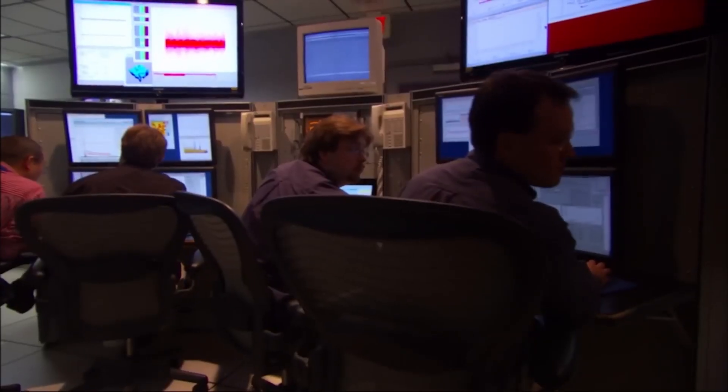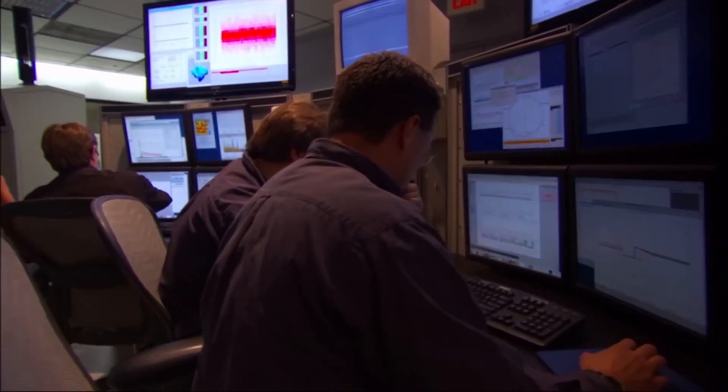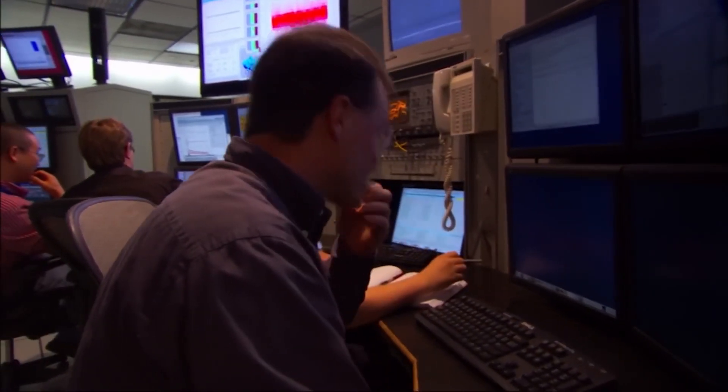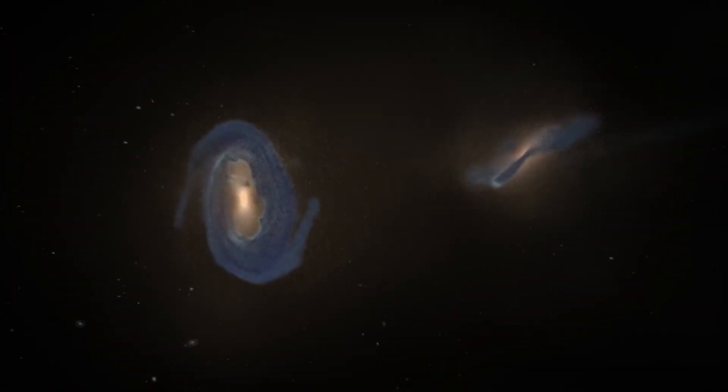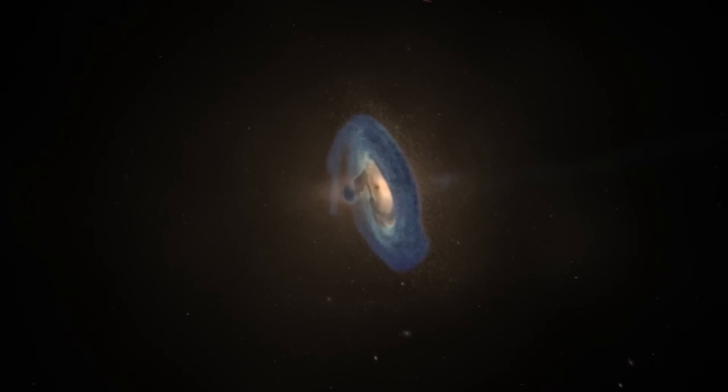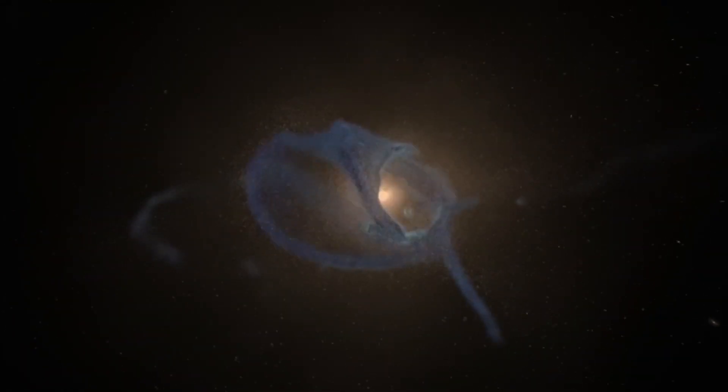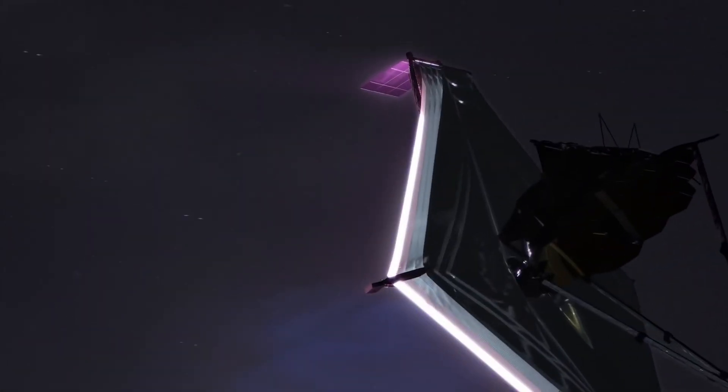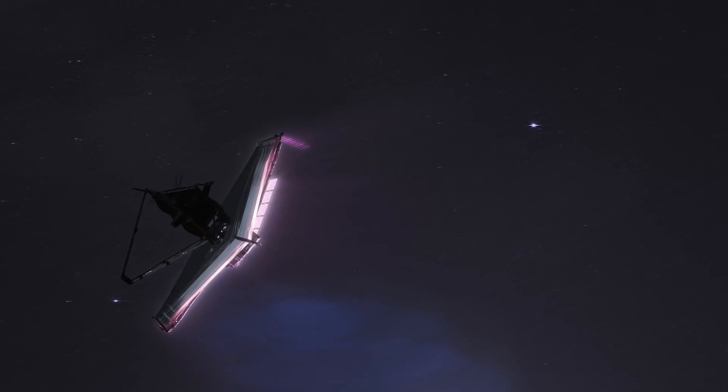Another stunning discovery stumped scientists. When researchers found primordial galaxies at the edge of the universe, they were skeptical about their authenticity. Some thought they might be nearby galaxies in disguise. So, they shared the data with other scientists around the world, hoping for the best. Amazingly, the James Webb Space Telescope confirmed that these ancient galaxies are real.